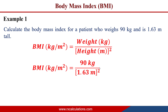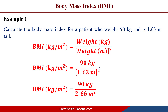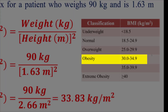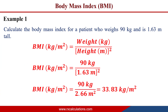Squaring 1.63 gives 2.66 m², so BMI = 90 ÷ 2.66 = 33.83 kg/m². Referencing the classification chart, 33.83 falls between 30 and 34.9, which indicates that this patient is obese and falls into the category of Class 1 obesity.